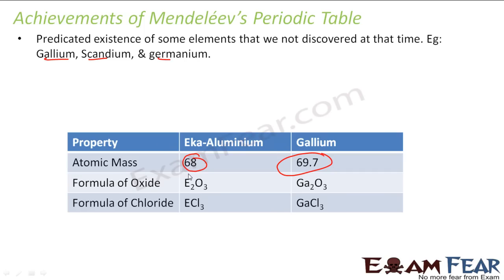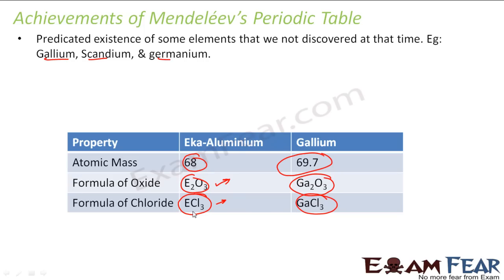He also guessed the formula of its oxide and chlorides. He predicted the oxide formula to be E2O3 based on his periodic table, and that's exactly what it was. He also guessed the hydride formula as ECl3, and Gallium followed the same. So he guessed not only the existence of missing elements but also their chemical properties.